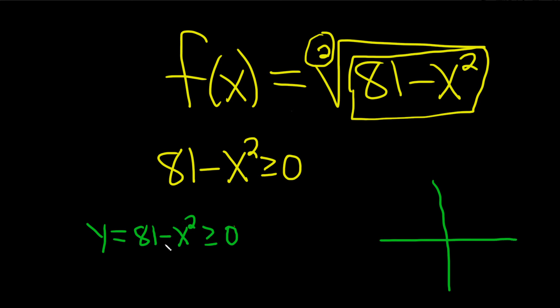Well, negative x squared is an upside down parabola, and when you add 81 to it, you basically have something that looks like this, right? You have an upside down parabola shifted up 81 units. It's really cool.